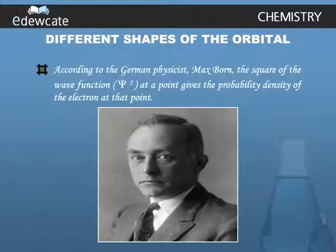According to the German physicist Max Born, the square of the wave function, which is psi squared at a point, gives the probability density of the electron at that point.